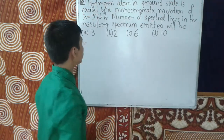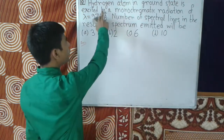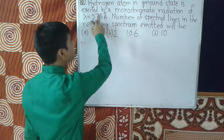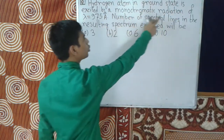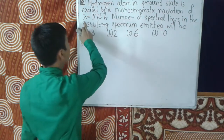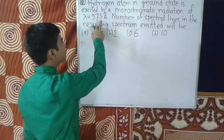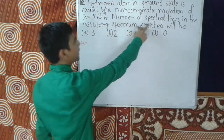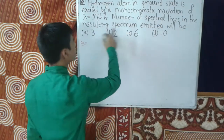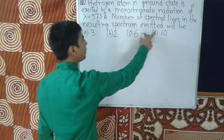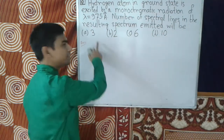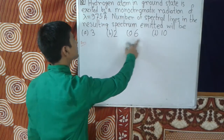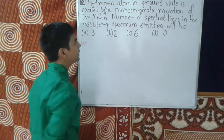The question is: a hydrogen atom in ground state is excited by monochromatic radiation of lambda equal to 975 angstrom. The number of spectral lines in the resulting spectrum emitted will be — option A: 3, option B: 2, option C: 6, option D: 10.